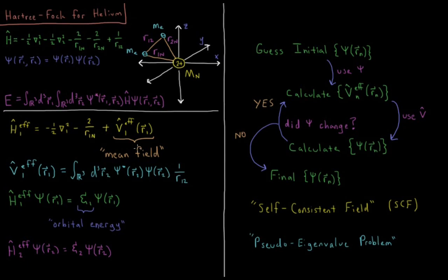The effective mean field that electron one feels due to electron two is computed by integrating over all possible coordinates of electron two: psi-star(r2) times psi(r2) — the probability density, i.e., the probability that electron two is at r2 — divided by the distance between our current location and that location of electron two, integrated over all possible locations of electron two. This gives us a mean field of how the average charge density of electron two repels electron one at a given location.